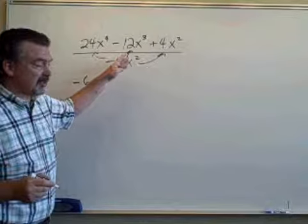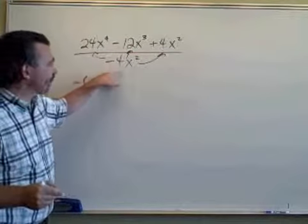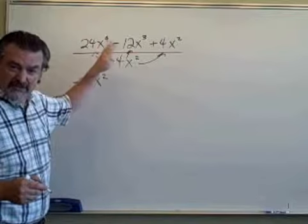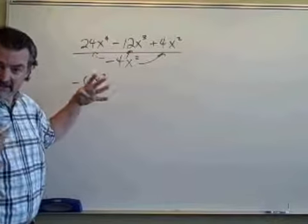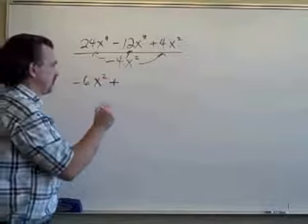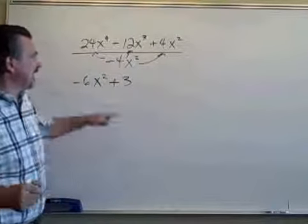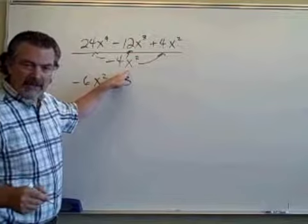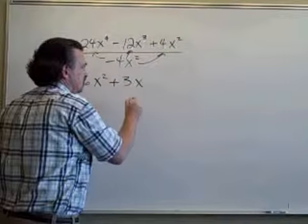Now let's go to the next term. Minus 12 divided by minus 4. Think of it as a negative divided by a negative. That's a positive. So that becomes plus 12 divided by 4 is 3. And x to the 3rd divided by x to the 2nd is x to the 1st.